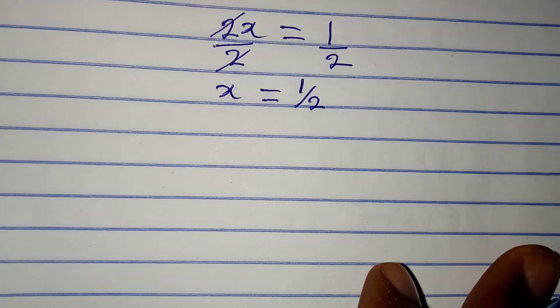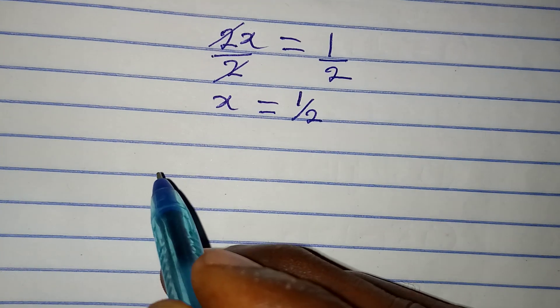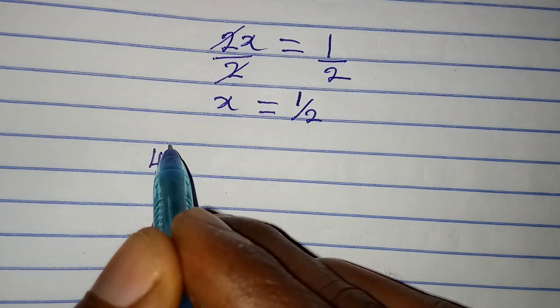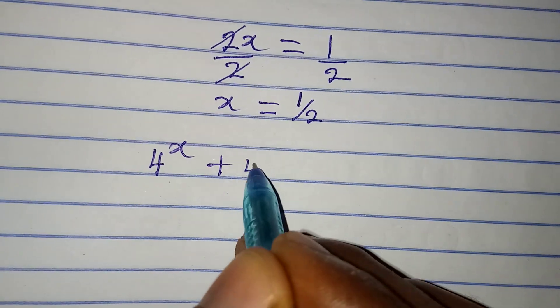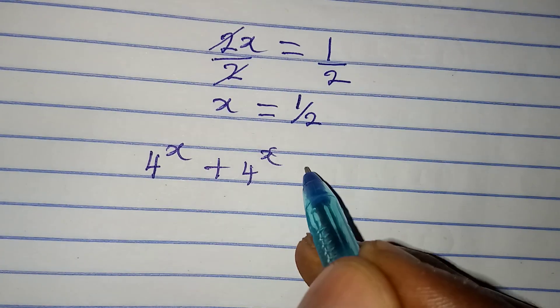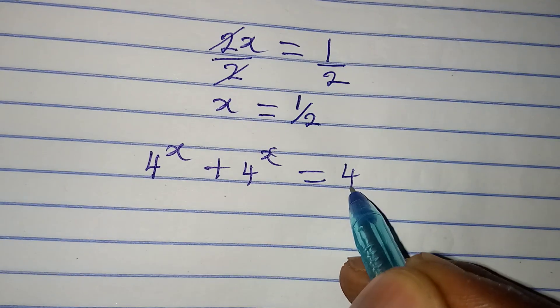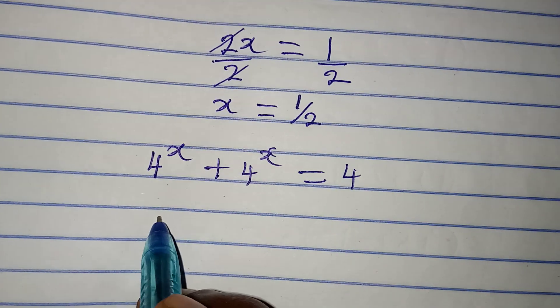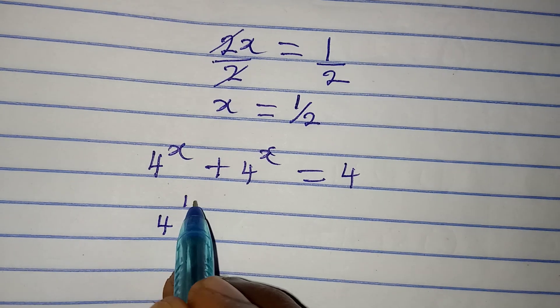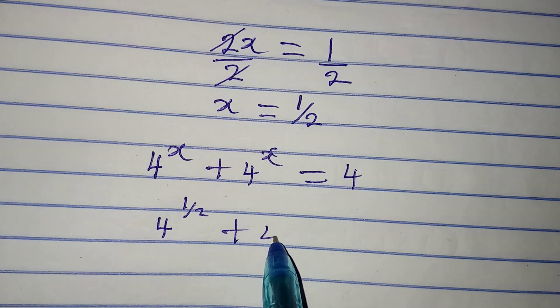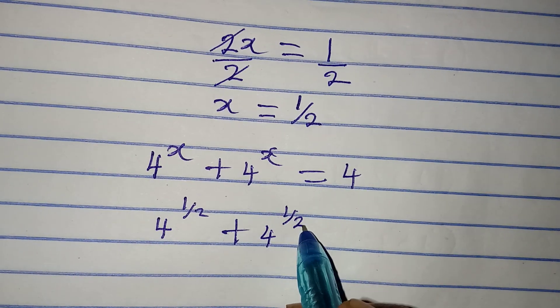Now let's go back to the equation and look at what we had. We got 4 to the power of x plus 4 to the power of x equals 4, right? Now x is 1 over 2, meaning we are having 4 to the power of 1 over 2 plus 4 to the power of 1 over 2.